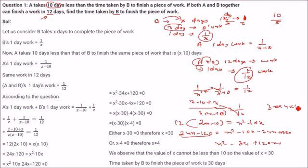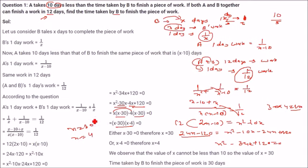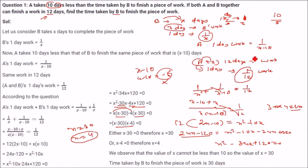And this is plus 120. So 30 into 4 is 120. For 34X, we can write minus 30X minus 4X. Take X common — X minus 30 will be there. Take minus 4 common — X minus 30 will be there. So the factors are X minus 4 and X minus 30. X will be either 30 or X equals 4. But X cannot be less than 10, because 4 minus 10 is minus 6, which is not logical. So X is 30 — it takes 30 days to finish the work.